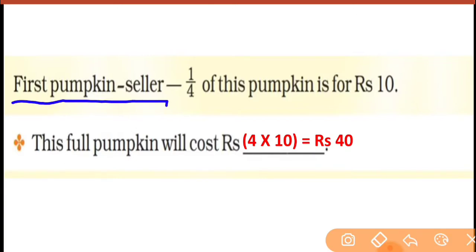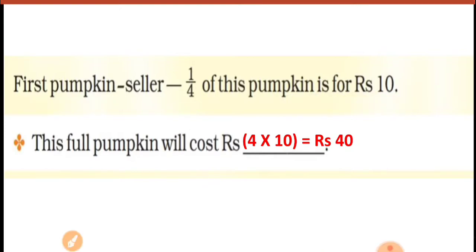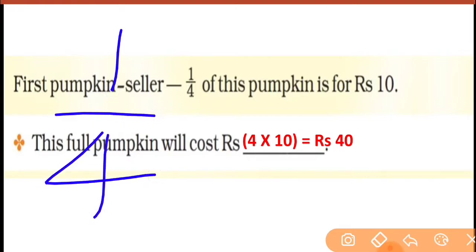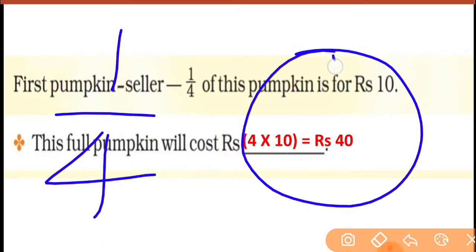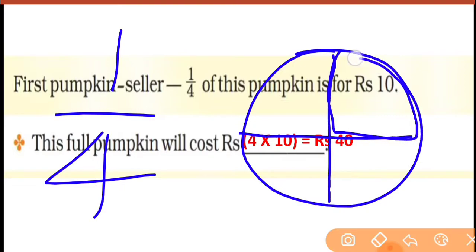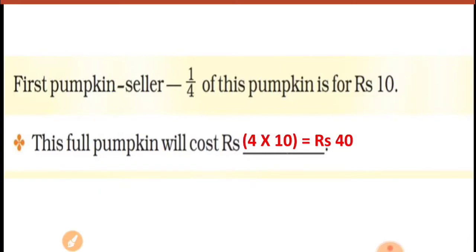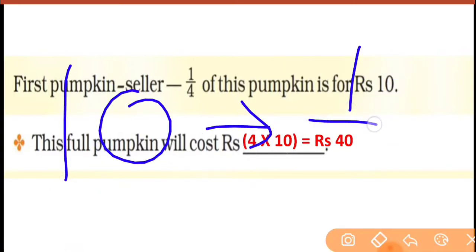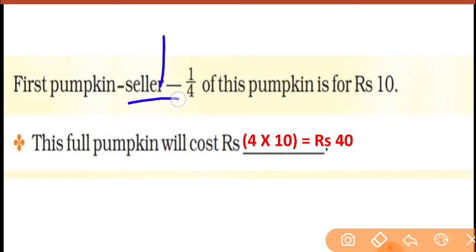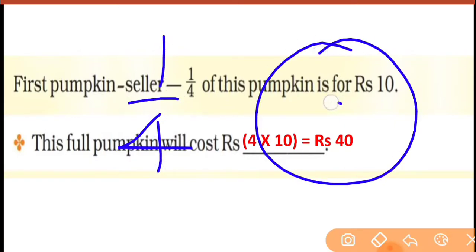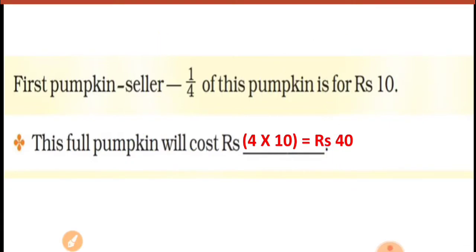First pumpkin seller ne kya bola? One upon four of this pumpkin is for rupees 10. One upon four — dekho, one upon four means this is one quarter. One upon four means one quarter. Usne bola ki tumhe 10 rupees mein one upon four pumpkin milega. Ek full pumpkin ka kitna part milega? One upon four part tumhe milega. Yeh pura pumpkin hai — tho aapko kitna pumpkin milega? Only one upon four, only 10 rupees mein. Yeh clear ho gaya?